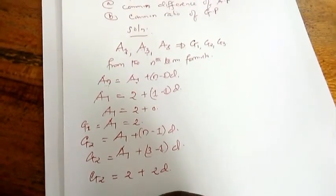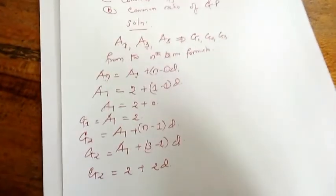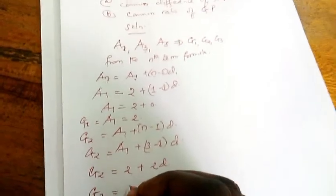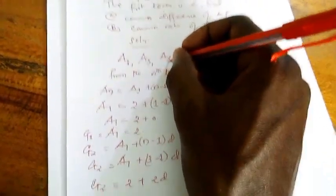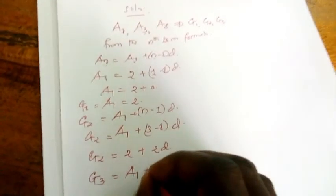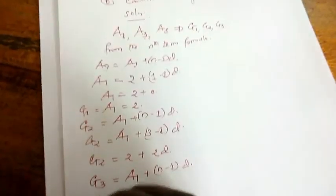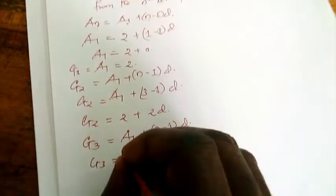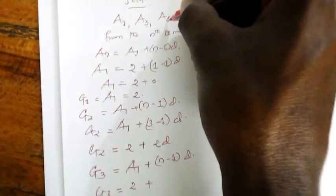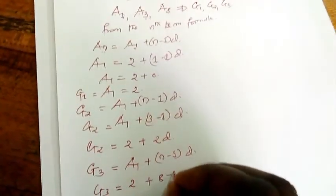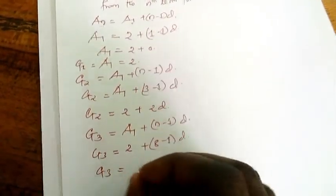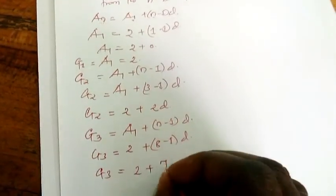So G2 equals A1, which is 2, plus 3 minus 1 equals 2 times D. This is the second term of what? It is also the third term of what? But it is the second term of geometric progression. Then let's look at the third. We were given A8. If it is eighth term, we will do what? We say A1 plus N minus 1 times D. So G3 equals A1.